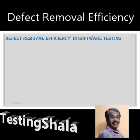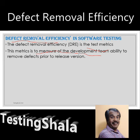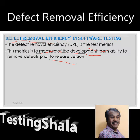What is defect removal efficiency? Defect removal efficiency is a test metric used to measure the development team's ability to remove defects prior to release. It is used to check the efficiency of a development team and find their ability to remove as many defects as possible before releasing to the customer.